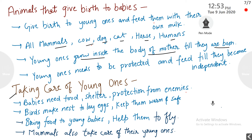Next, taking care of young ones. Babies need food, shelter, and protection from enemies. All animals take care of their young ones. For example, birds make nests to lay eggs, keep them warm and safe from other animals, bring food to the young ones, and help them learn to fly. Mammals also take care of their young ones — they feed them and keep them safe from other animals.